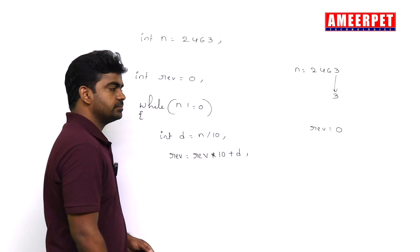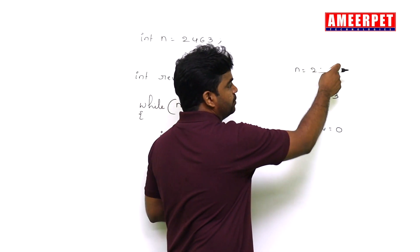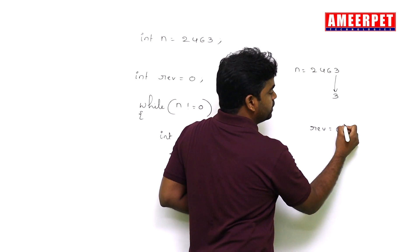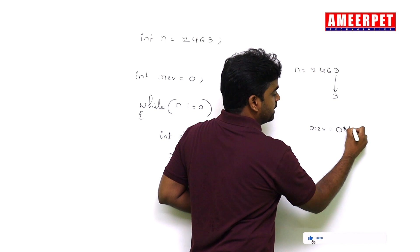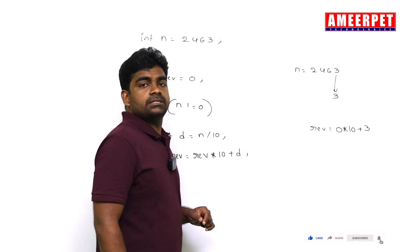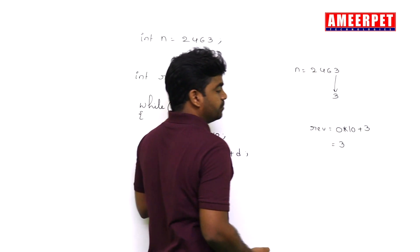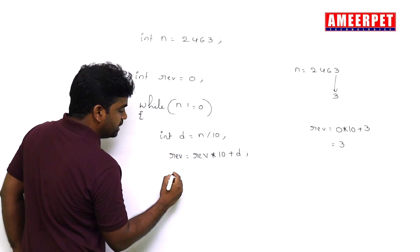So what is happening here? Reverse into 10, the first digit is 3. Reverse into 10 means 0, 0 into 10 plus the digit is 0 plus 3, that value is 3. So after working with the digit we know that...